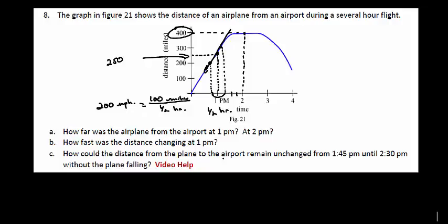How could the distance from the plane to the airport remain unchanged from 1:45, it looks like it's probably earlier than that, until 2:30 without the plane falling?